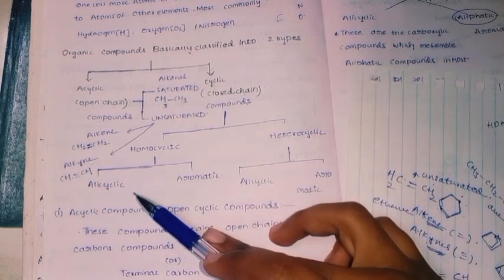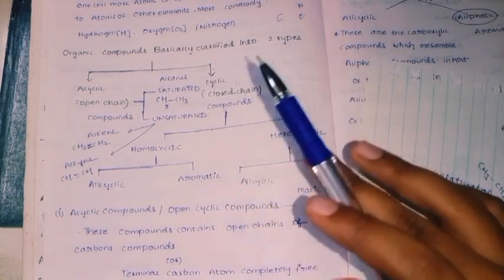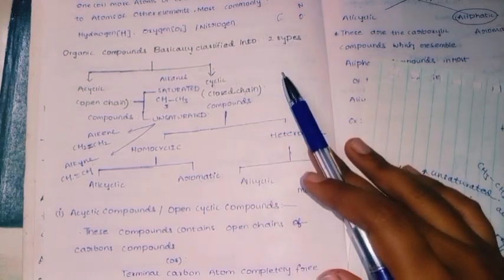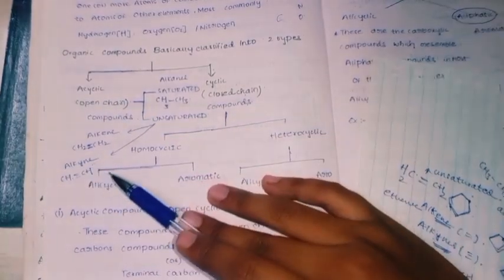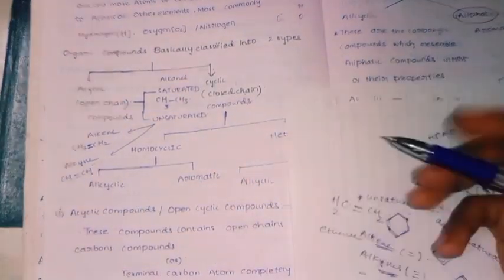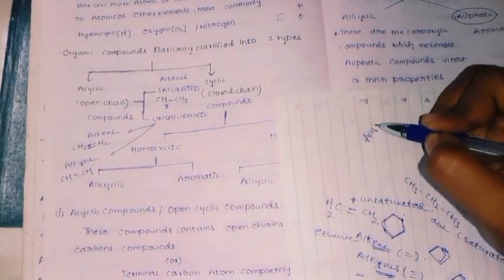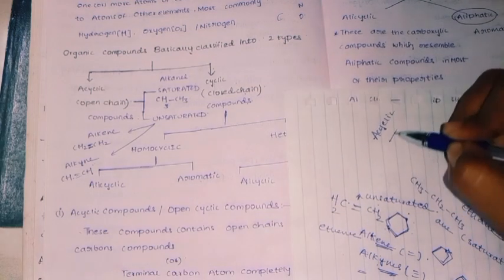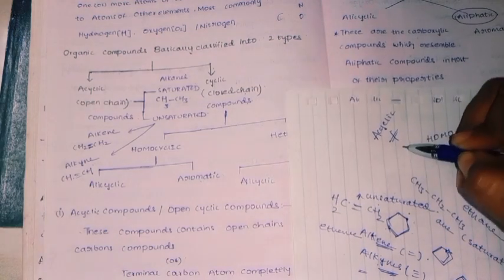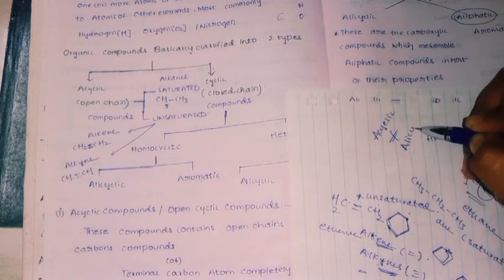Homo is of two types: alicyclic and aromatic. Everyone is very confused — acyclic is different and alicyclic is different. Remember: acyclic is not equal to alicyclic.